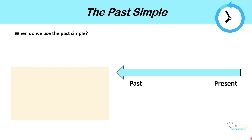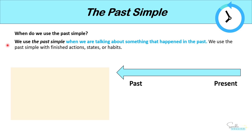So when do we use the past simple? We use the past simple when we are talking about something that happened in the past. We use the past simple with finished actions, states, or habits. We would use the present tense to talk about something happening right now in the present, but we use the past tense to talk about a finished action in the past.